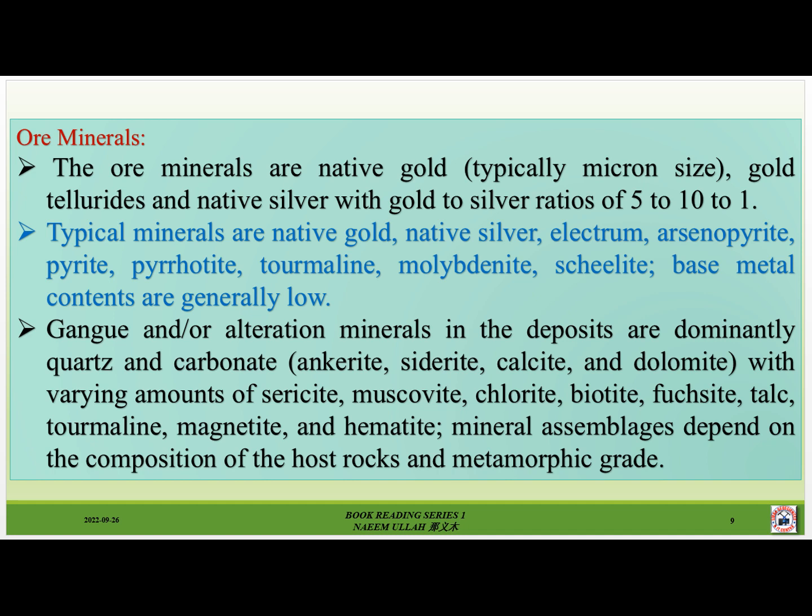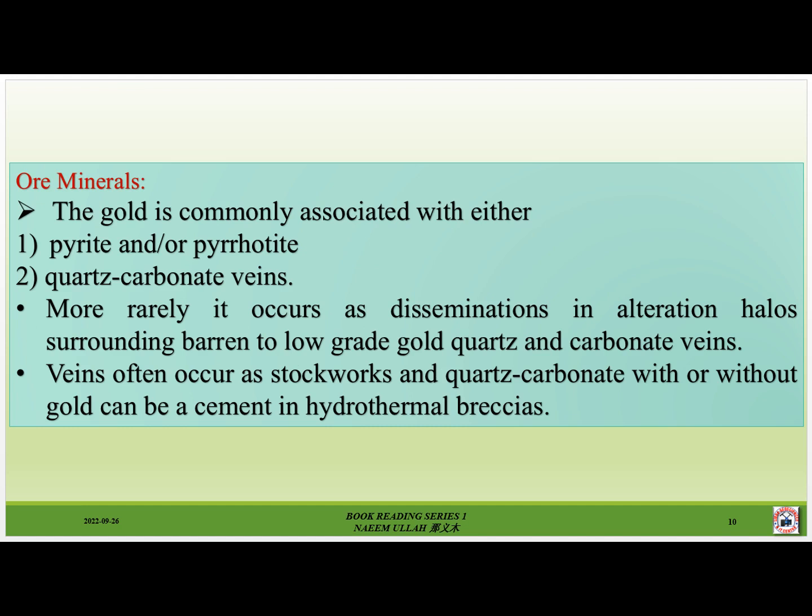Gangue and/or alteration minerals in the deposits are dominantly quartz and carbonates — ankerite, siderite, calcite, and dolomite — with varying amounts of sericite, muscovite, chlorite, biotite, fuchsite, talc, tourmaline, magnetite, and hematite. Mineral assemblages depend on the composition of the host rocks and metamorphic grade. The gold is commonly associated with either pyrite and/or pyrrhotite, or quartz-carbonate veins.